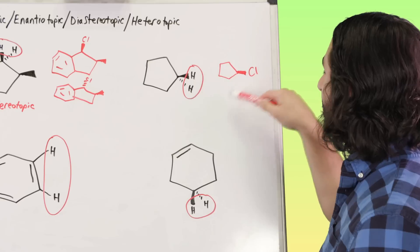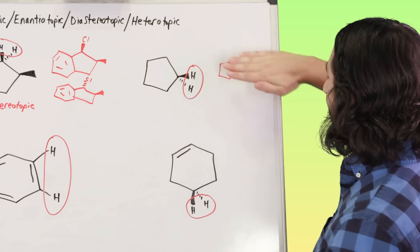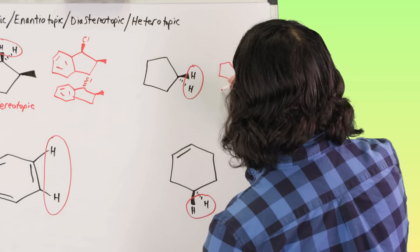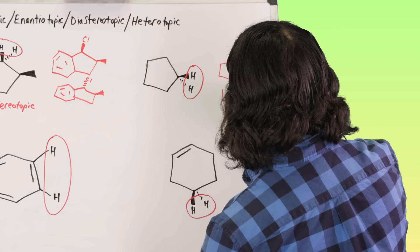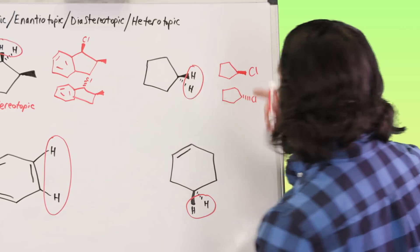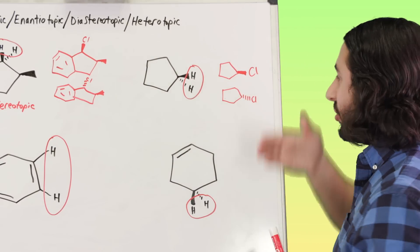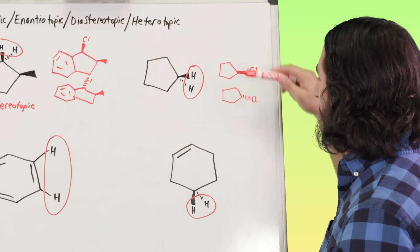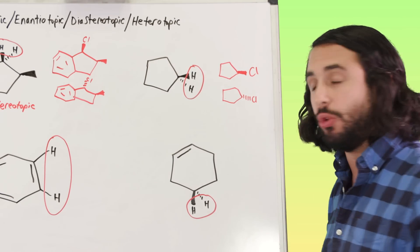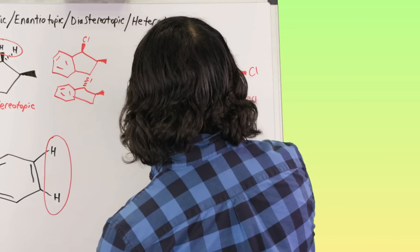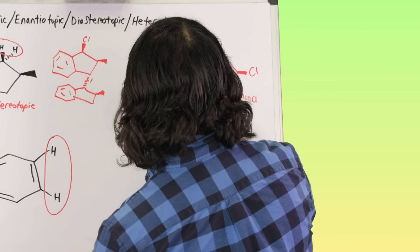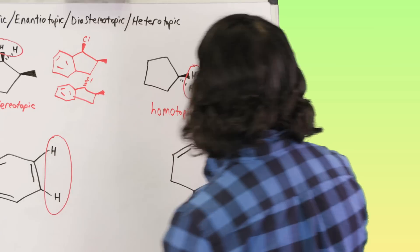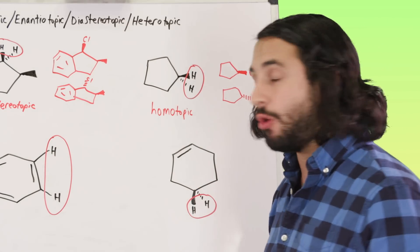So all we have to do is flip this on the other side and we would get the other situation. These are actually the same molecule, we can just take this one, flip it on the other side, and we would get that. And so because these are the same molecule, these protons are homotopic. Same molecule, those protons are homotopic.